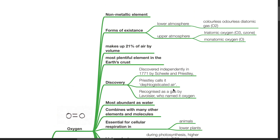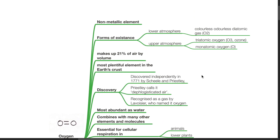Oxygen is a non-metallic element. Forms of existence include, at the lower atmosphere, a colorless odorless diatomic gas O2, and in the upper atmosphere, triatomic oxygen O3, known as ozone, or monoatomic oxygen. It makes up 21% of air by volume and is the most plentiful element in the earth's crust.